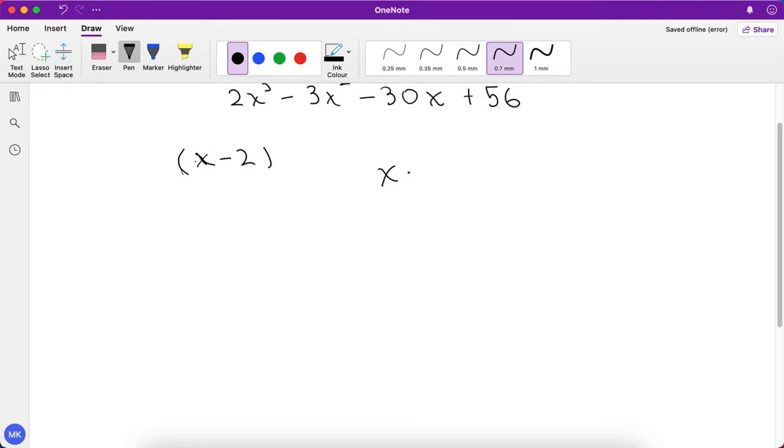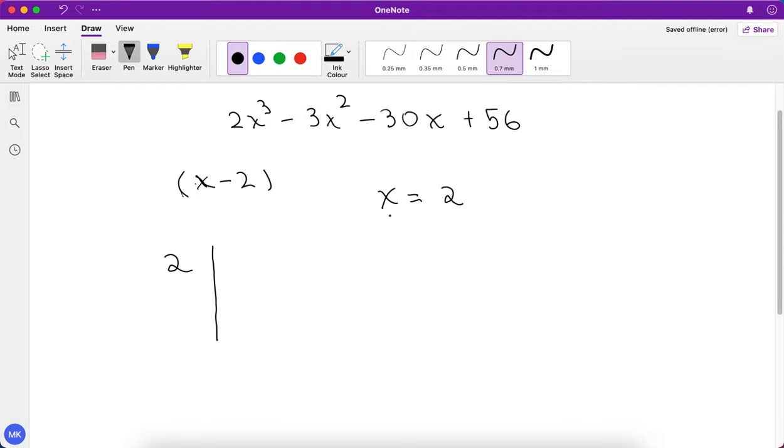So we first do x - 2 = 0, so x will be equal to 2. Then we write the 2 outside and we take the coefficients. So we take 2, -3, -30, and 56.